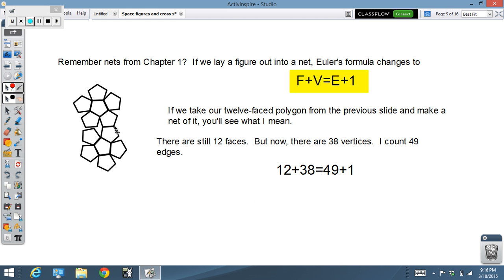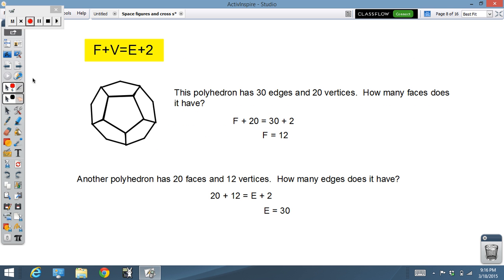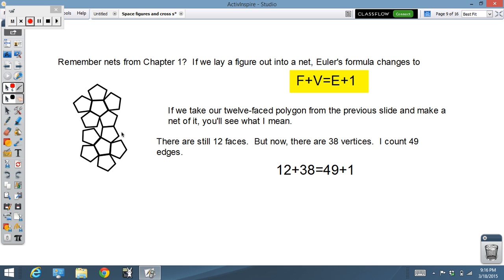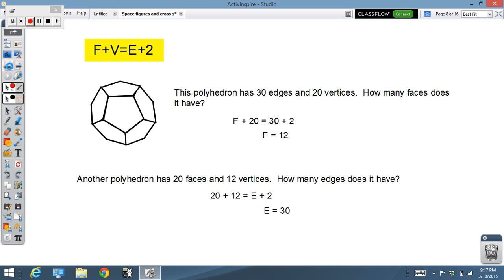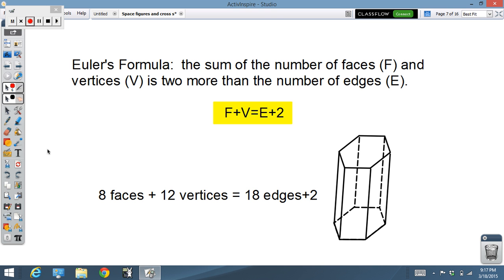Now, going back to chapter one. Remember nets? If we actually took this figure here from the last slide and made a net and put it all, folded it out into one plane. Here are all the faces represented, but it's all folded out and laid out flat in front of us. Euler's formula changes in that case. Faces plus vertices equals edges plus one. Let me show you how that works. Okay, so just like we did back here, where we counted. Let's do this one real fast as an example. Faces, I'm counting eight. Top, bottom, one, two, three, four, five, six sides makes a total of eight. Eight faces.